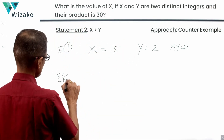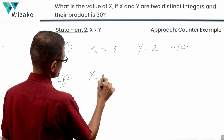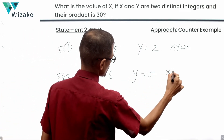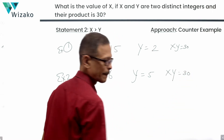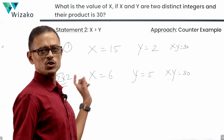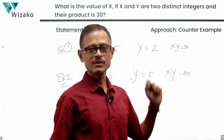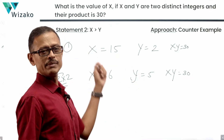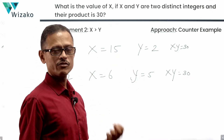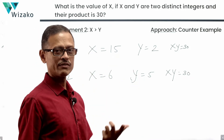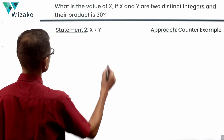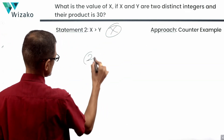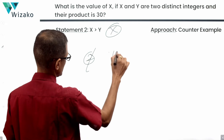Example two: x = 6, y = 5, x·y = 30 — two distinct integers, product is 30, and is x greater than y? Yes. We've found more than one value for x, so statement two alone is also not sufficient. Let's rule out answer option B and combine the statements to determine whether it is C or E.